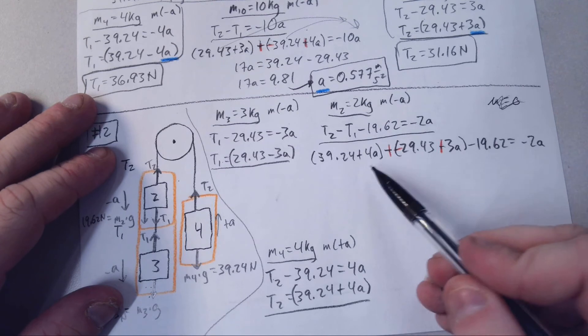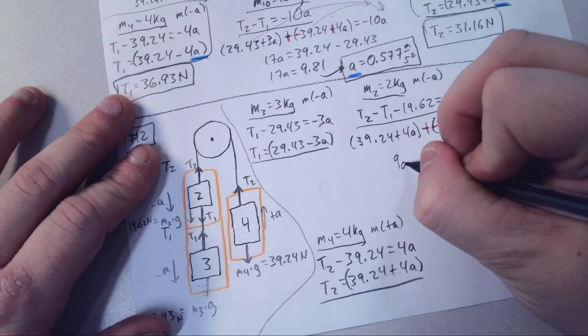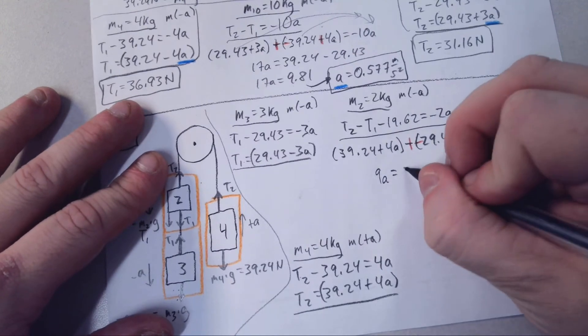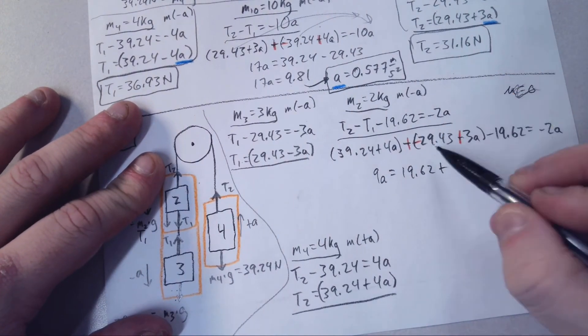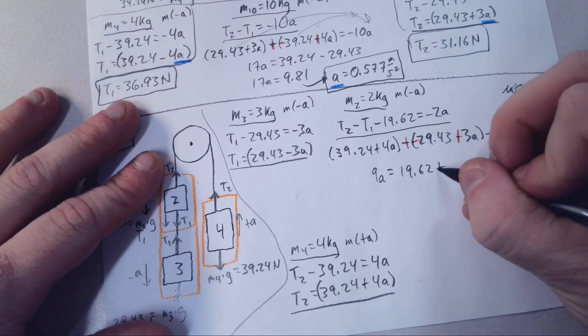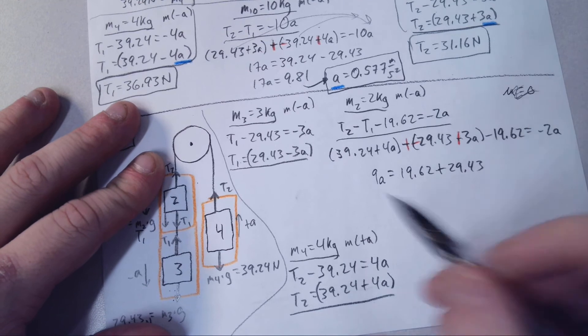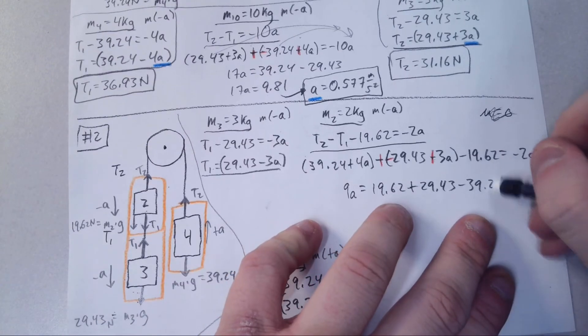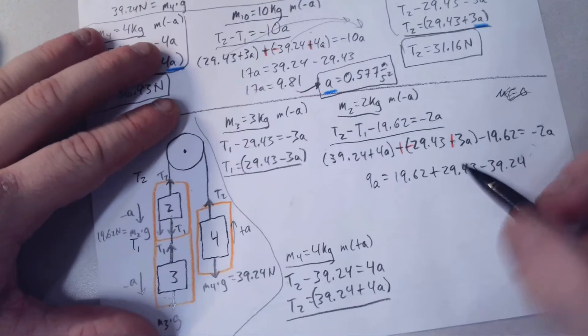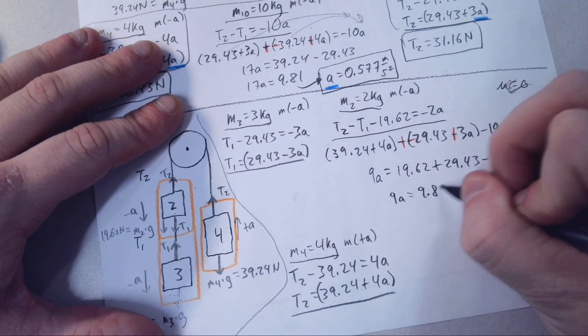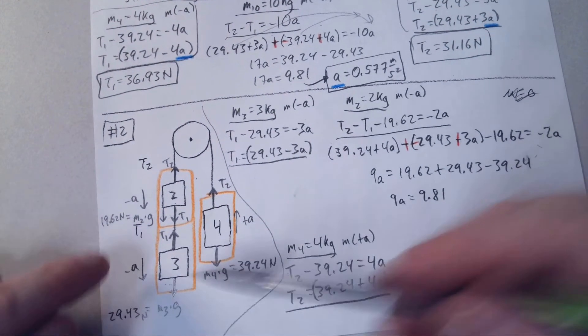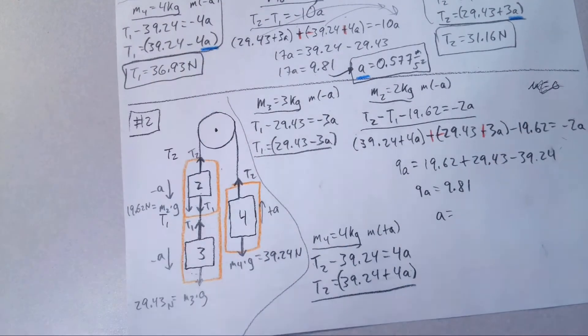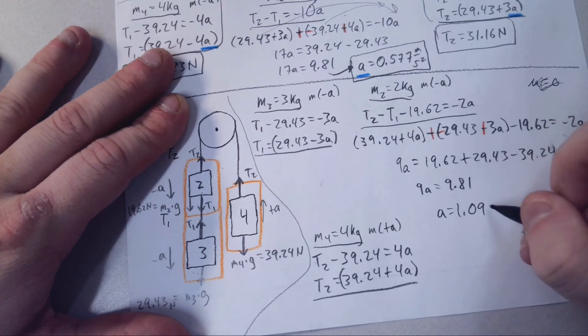We move all our A's over this side. So we have 4 plus 3, which is 7, plus 9 when this is moved over. That's 9A. And then basically everything that's negative needs to be added over, and everything that's positive needs to subtract it. So I'm going to add 19.62 over. I'm going to add 29.43 because it's negative here. And then because this is positive, I'm going to subtract it over. So minus 39.24. We solve for that. We do get 9.81. This time, it's a coincidence that we're getting this. It's just the problems that I've picked.